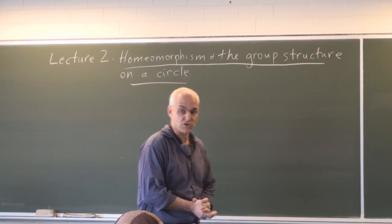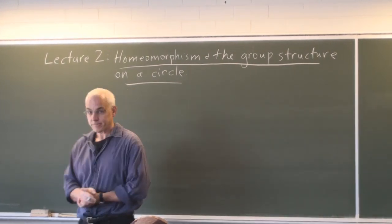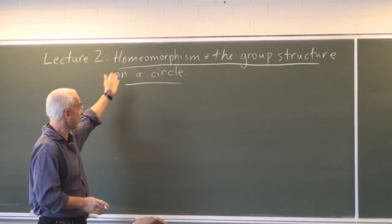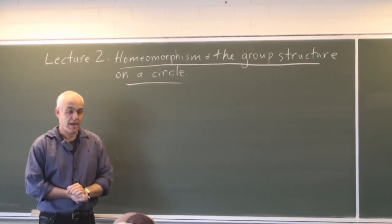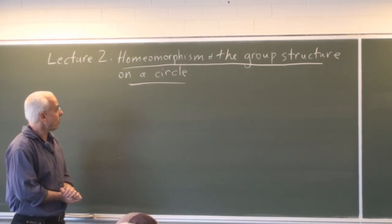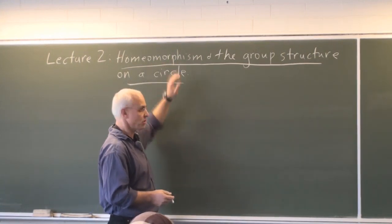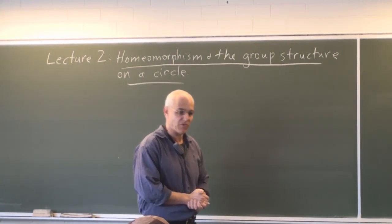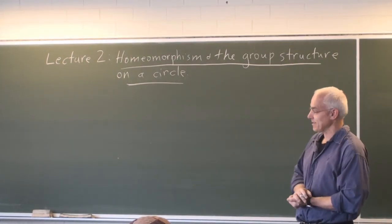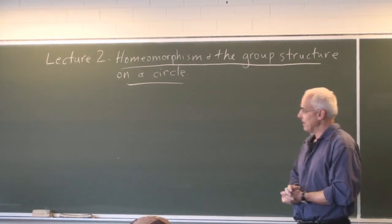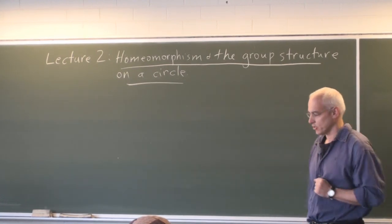Welcome to our second lecture in this beginner's course on algebraic topology. Today's lecture is called Homeomorphism and the Group Structure of a Circle. We are going to talk about homeomorphism, the basic notion of equality between topological spaces. Then, continuing on with what we did last time talking about one-dimensional objects, we're going to talk about a very important property of the circle, namely its group structure.